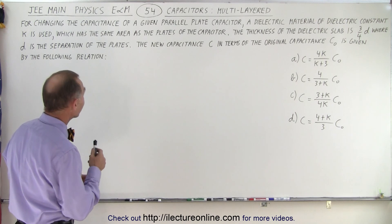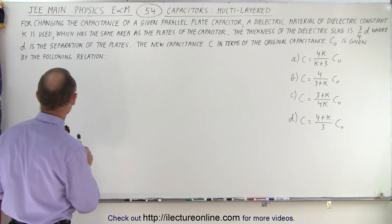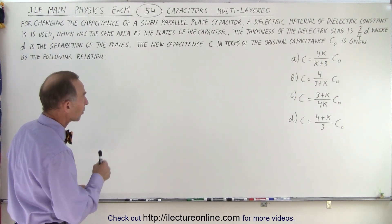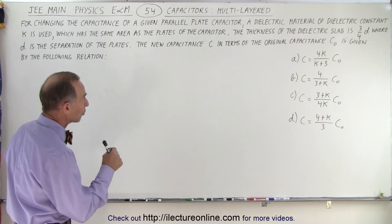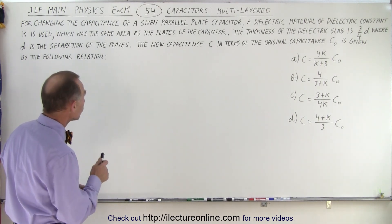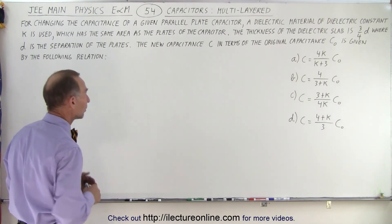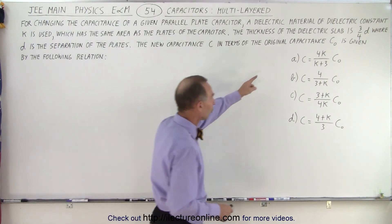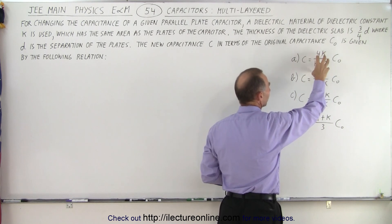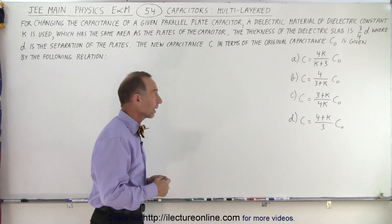For changing the capacitance of a given parallel plate capacitor, a dielectric material of dielectric constant K is used, which has the same area as the plates of the capacitor. The thickness of the dielectric slab is 3/4 D, where D is the separation of the plates. The new capacitance C in terms of the original capacitance C-naught is given by the following relation, and here we have four possible answers. The new capacitance is some constant times the old capacitance.